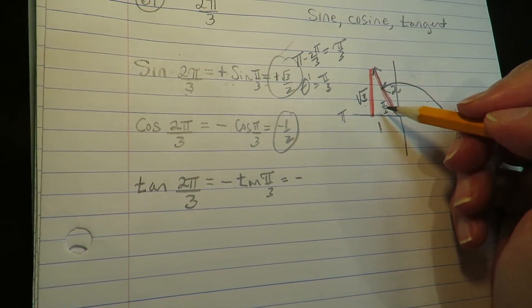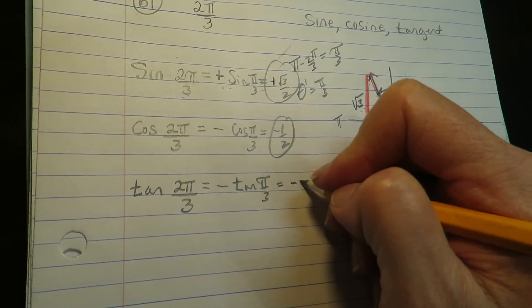Tangent is opposite over adjacent. So that's negative √3.